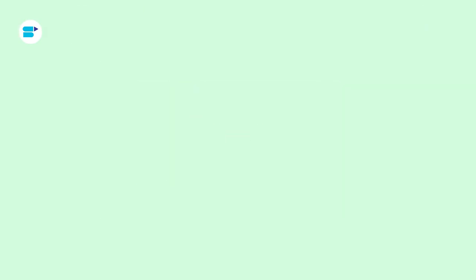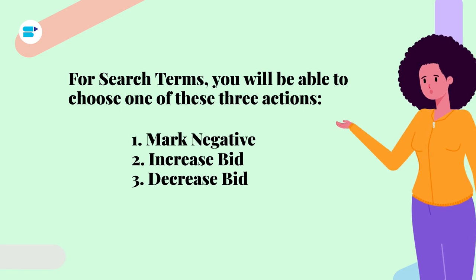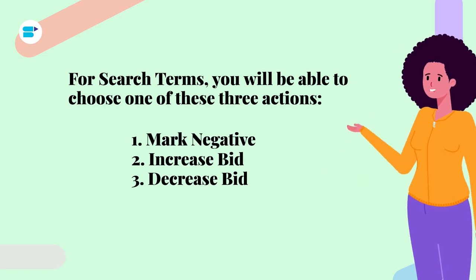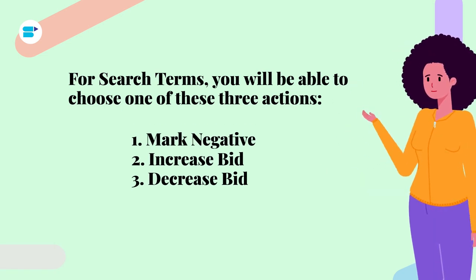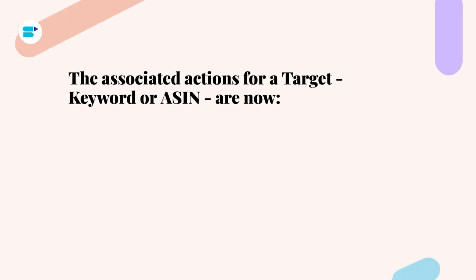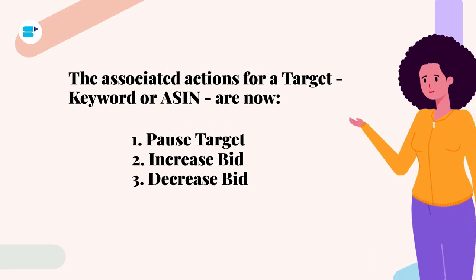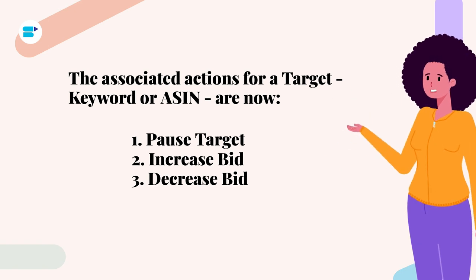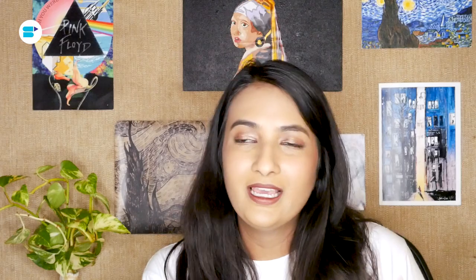For search terms, you will be able to choose one of three actions: mark negative, increase bid, or decrease bid. The associated actions for a target keyword or ASIN are: pause target, increase bid, and decrease bid. The addition of this powerful feature has made our automation algorithm more robust and more efficient.